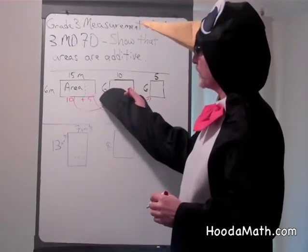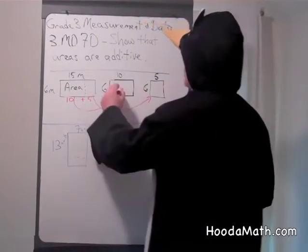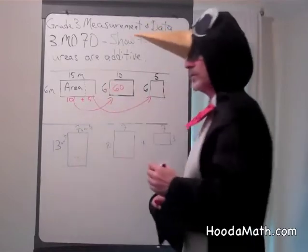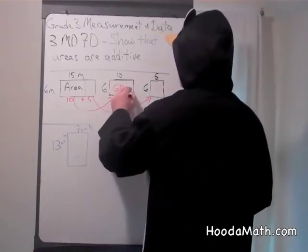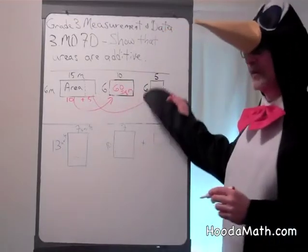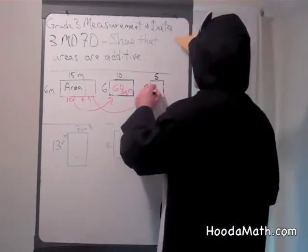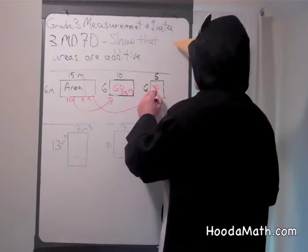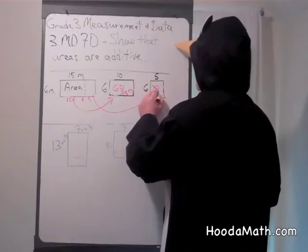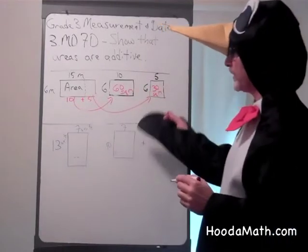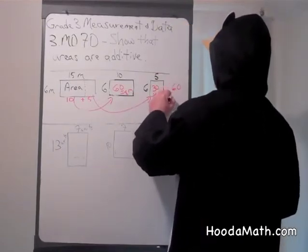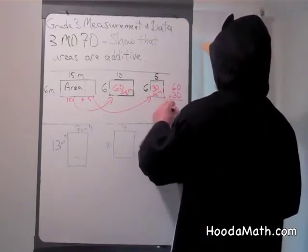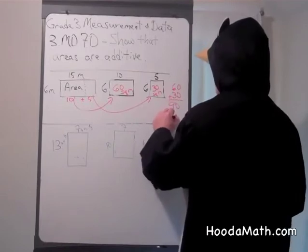The area can be found by multiplying 6 times 10, which is 60 square meters. And the area of this is 6 times 5, which is 30 square meters. To get the total area, we can add 60 plus 30, which is 90 square meters.